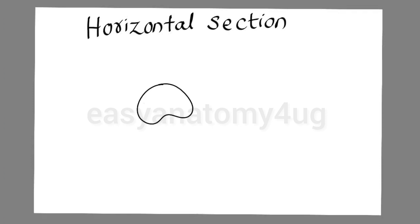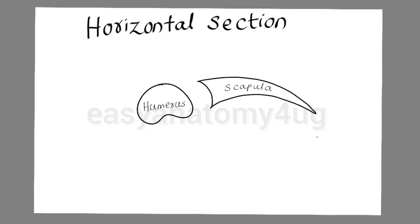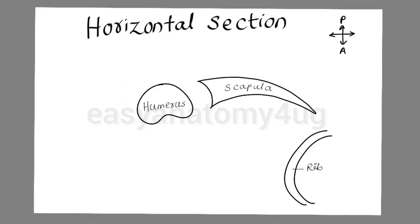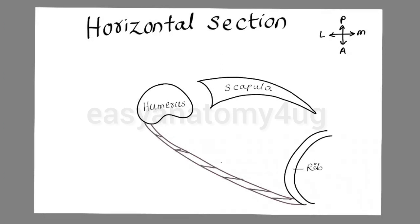First we will draw humerus, then we will show the posterior structure that is scapula, then we will draw rib. So the horizontal section will pass through all these structures: humerus, scapula, and rib. Now let us show the directions. We will draw the anterior wall, which is formed by the pectoralis major extending from the sternum up to the lateral lip of the bicipital groove, along with the pectoralis minor muscle.